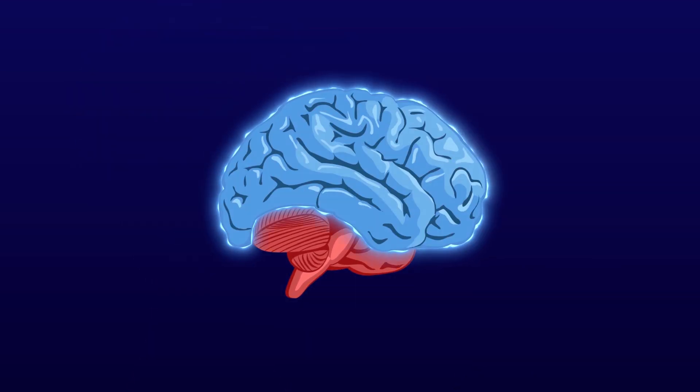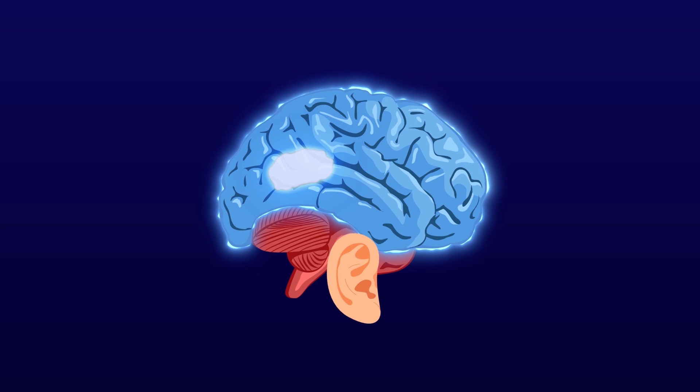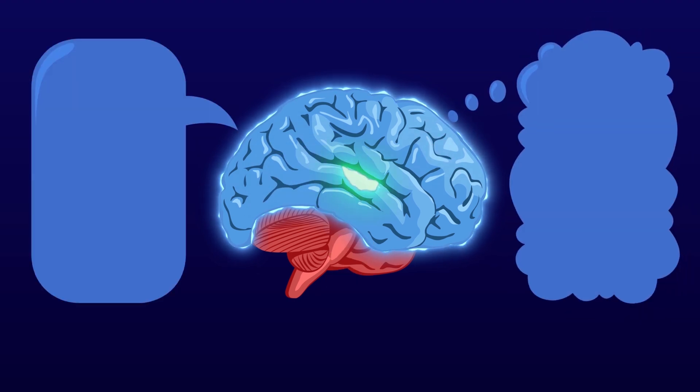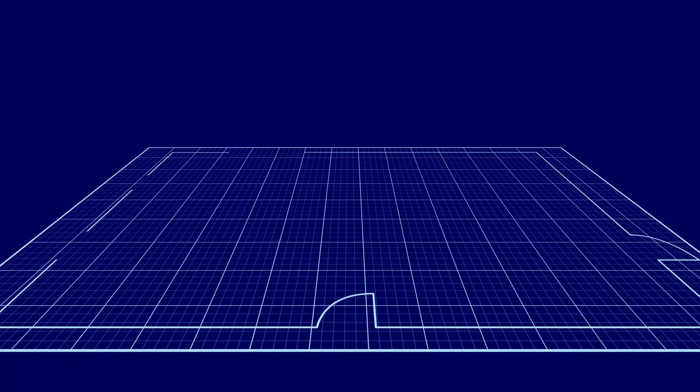This part of the brain is called the neocortex. The neocortex is responsible for everything we consider intelligence: seeing, hearing, abstract thinking, language, arts, and science. It learns a model of the world in your head.